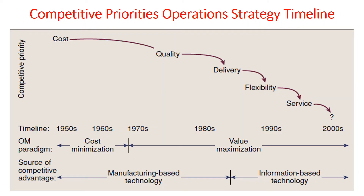These are the competitive priorities of operation strategies based on timelines. In 1915, the competitive priority was cost — organizations with lower cost could compete better. So organizations compete on cost first.